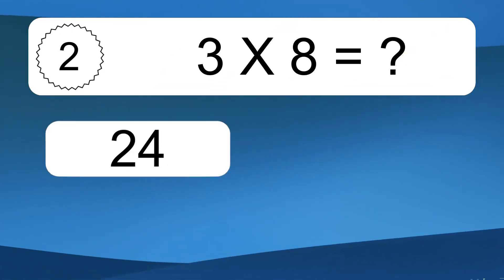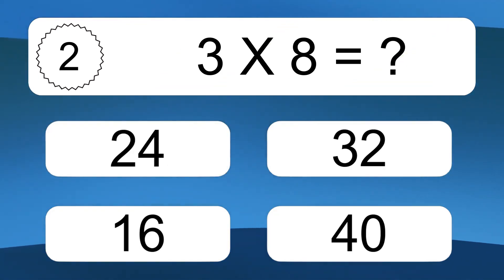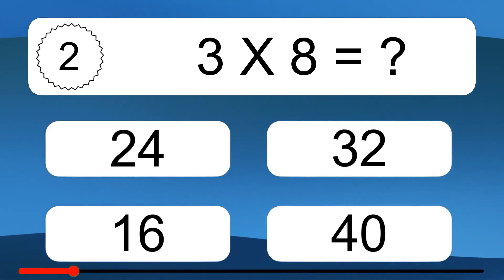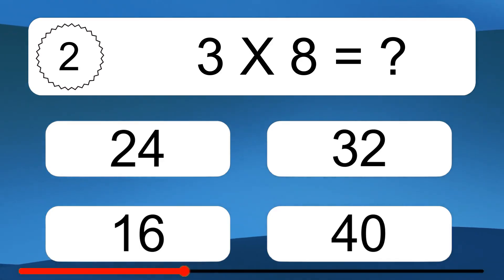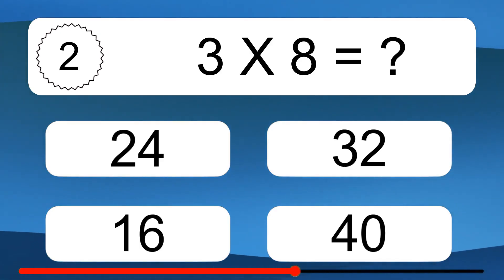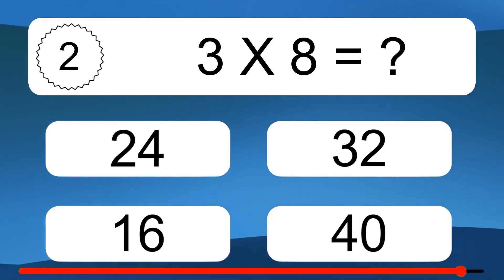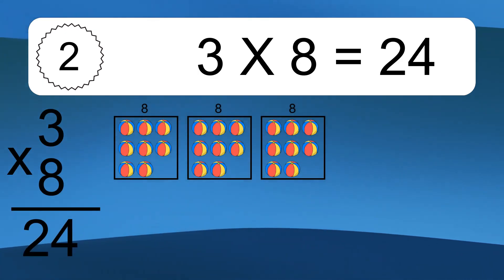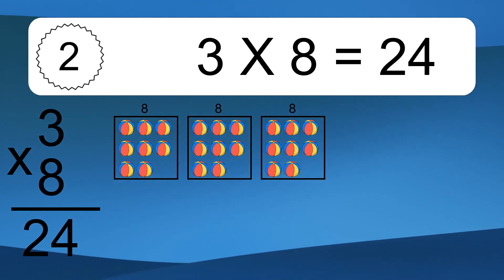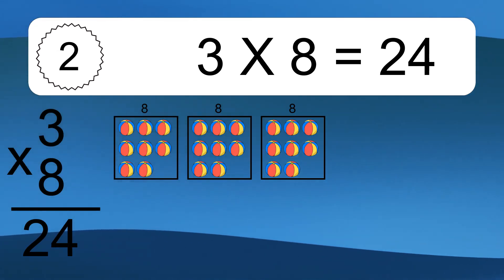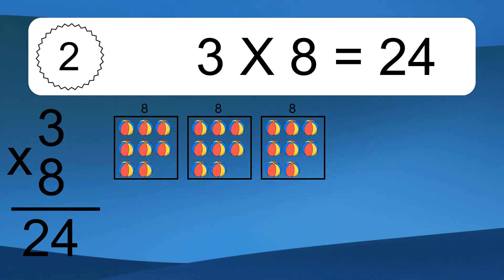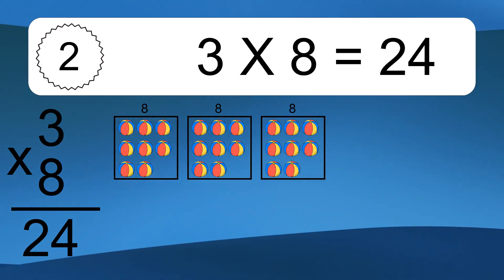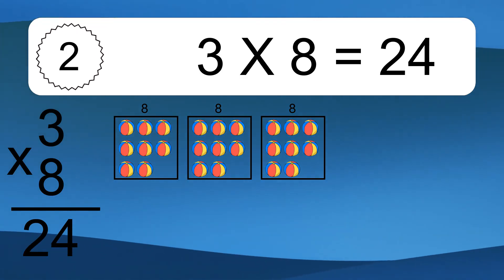3 times 8 equals what? 3 times 8 equals 24. We have 3 boxes, and each box has 8 colorful balls inside. If you count all the balls in all the boxes together, you will have 3 times 8 balls. This equals 24 balls.